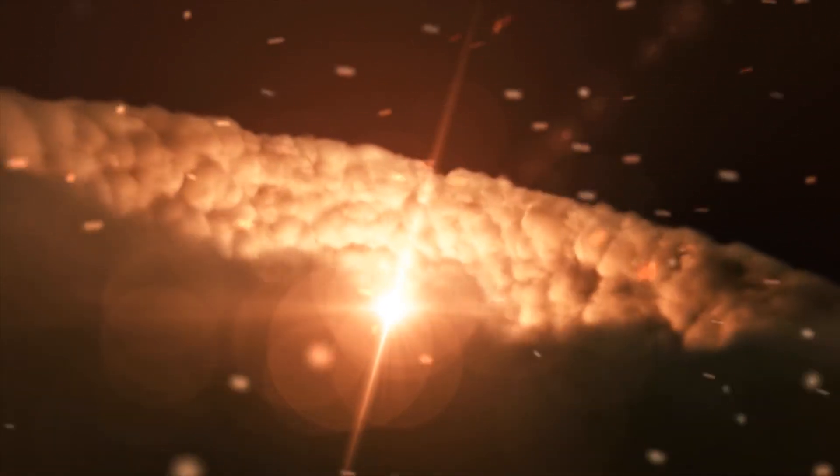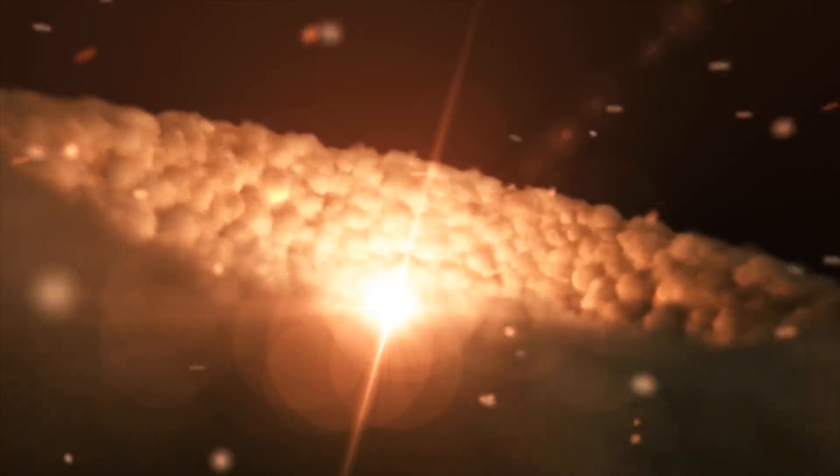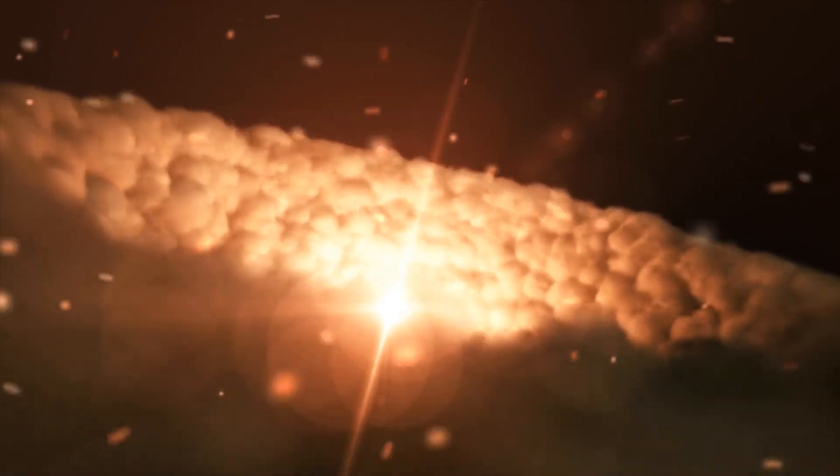Protostars are very difficult to be seen in the visible spectrum because they are surrounded by dust and gas, which blocks the light they emit.